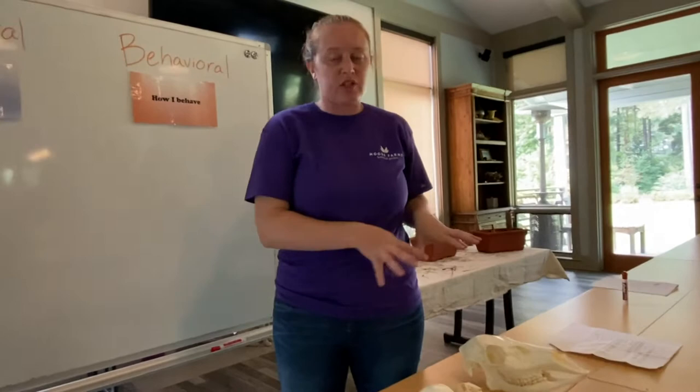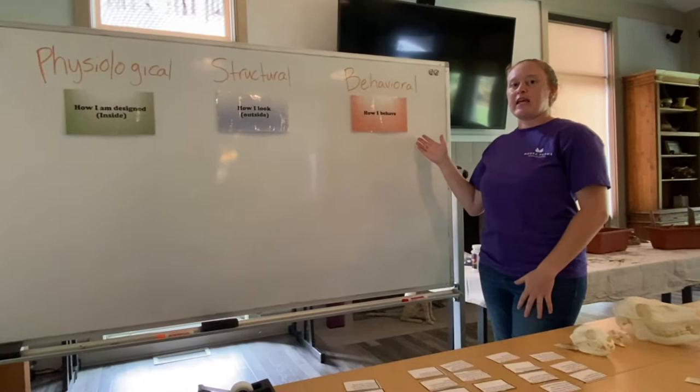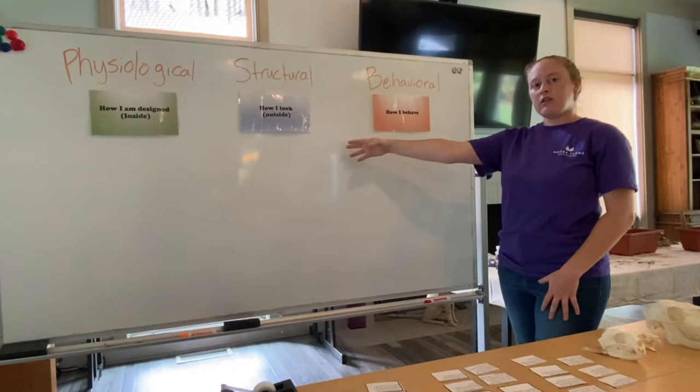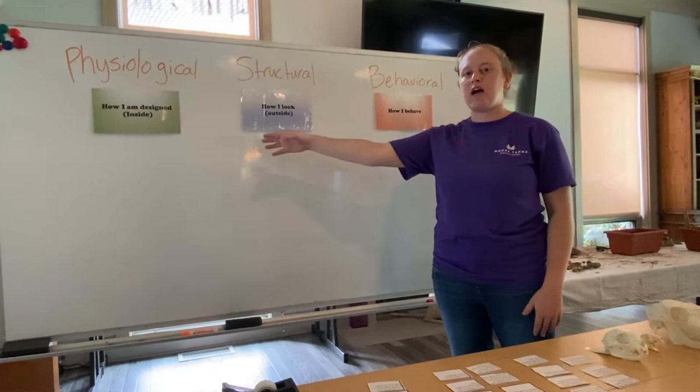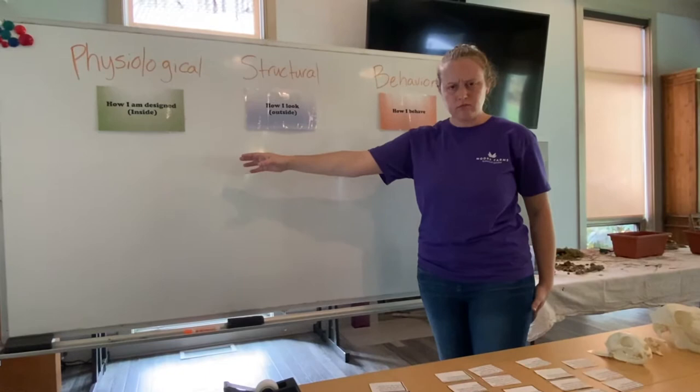Now that we've seen some skull adaptations, let's talk about three different types of animal adaptations. Behavioral, which is how an animal acts or behaves. Structural, which is how they look on the outside. And physiological, which is how they are designed — most of the time it deals with internal organs, so you may not always be able to see physiological adaptations.